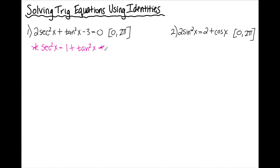If you want an easy way to derive or memorize the identities we're going to be using today, please take a look at the video linked in the comments below for deriving trig identities. Since I know that secant squared is equal to 1 plus tan squared, I'm going to replace that secant squared with 1 plus tan squared, then carry down the rest of my equation.